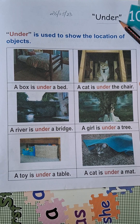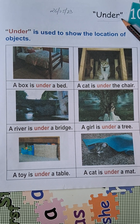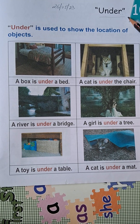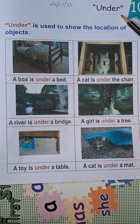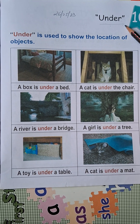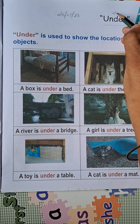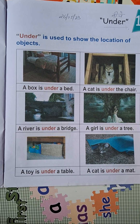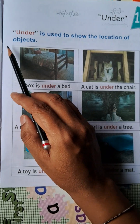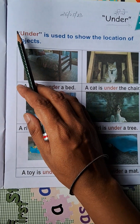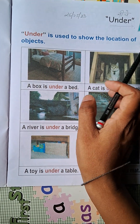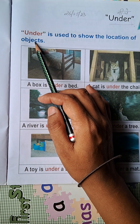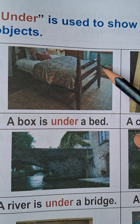Under is a word which is used to show the location of objects. Just like 'in' is used to show objects inside something, and 'on' is used to show objects on top, under means neeche — which object is below which. For that we use the preposition 'under'. Under is also a word used to show the location of objects.